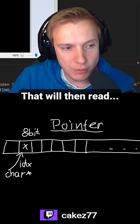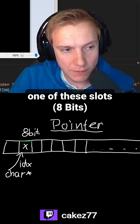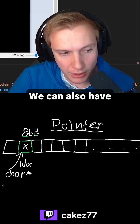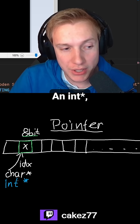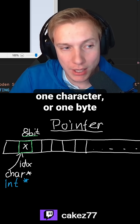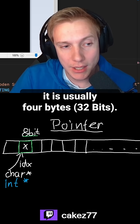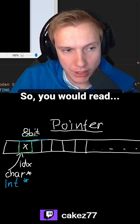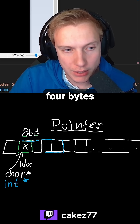For example, we can have a character pointer that will read one of these slots — eight bits. We can also have an int pointer. An int pointer is not one character or one byte; it is usually four bytes, so you would read four bytes.